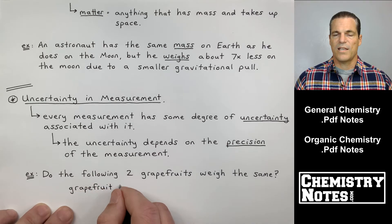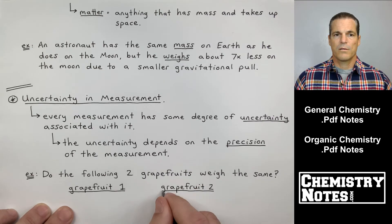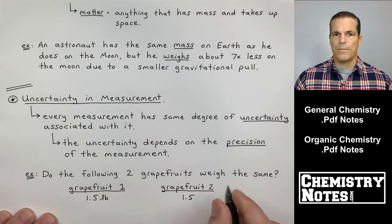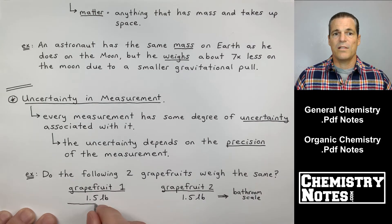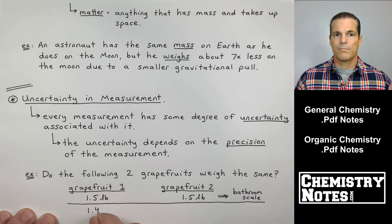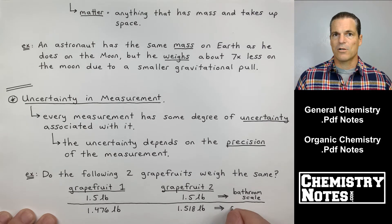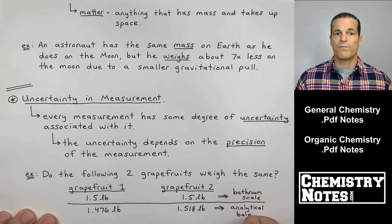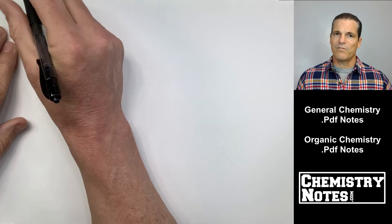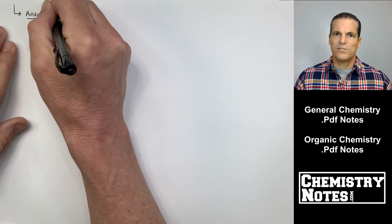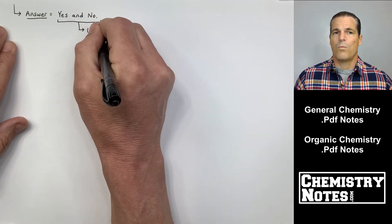As an example, do the following two grapefruits weigh the same? I have grapefruit one on the left and I got grapefruit two on the right. Well, in one instance, if I'm using say a bathroom scale and I plop both grapefruits on the bathroom scale individually, they both weighed 1.5 pounds. They weigh the same. Now, what if I'm using a much more elite measuring instrument, such as an analytical balance? Well, grapefruit one weighs 1.476 and the other guy weighs slightly over 1.5 pounds. Now they don't weigh the same. They weigh different. So the answer is, do these two grapefruits weigh the same? Yes and no.